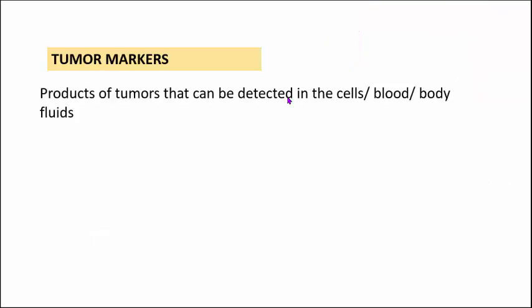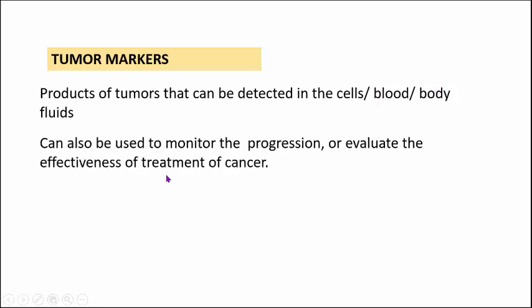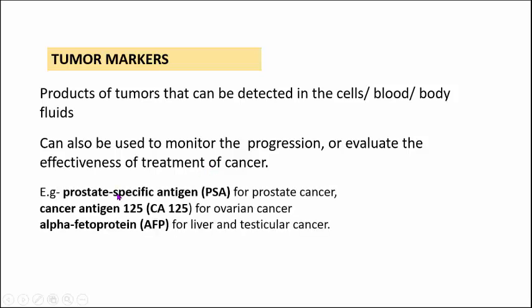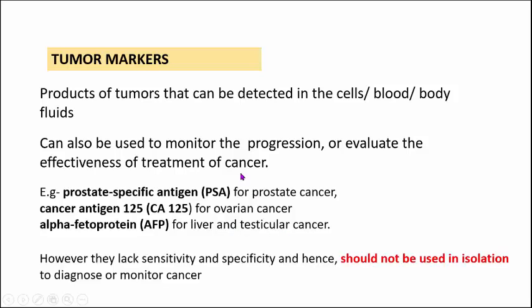Lastly, we discuss tumor markers — products of tumors detectable in cells, blood, or body fluids, used to monitor disease progression or evaluate treatment effectiveness. Examples include prostate-specific antigen (PSA), elevated in prostate cancer; cancer antigen 125 (CA-125), significantly elevated in ovarian cancers; and alpha-fetoprotein, elevated in both liver and testicular cancers. Importantly, tumor markers lack sensitivity and specificity because they can be elevated in non-neoplastic conditions. Therefore, tumor markers alone should not be used to diagnose or monitor cancer — they must be combined with physical examination, radiological, and other investigations to arrive at a conclusive diagnosis.